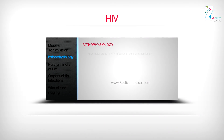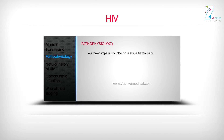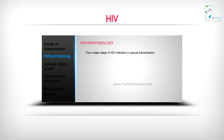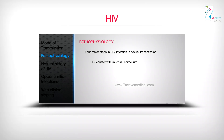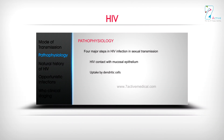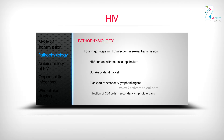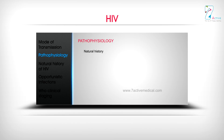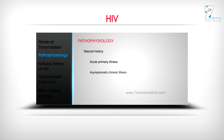Pathophysiology: There are 4 major steps in HIV infection via sexual transmission — HIV contact with mucosal epithelium, uptake by dendritic cells, transport to secondary lymphoid organs, and infection of CD4 cells in secondary lymphoid organs. The natural history proceeds through: acute primary illness, asymptomatic chronic illness, and symptomatic chronic illness.